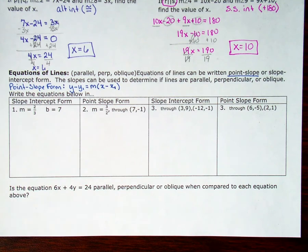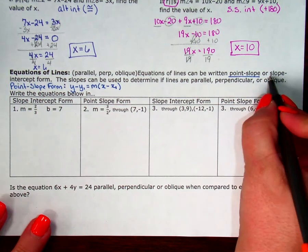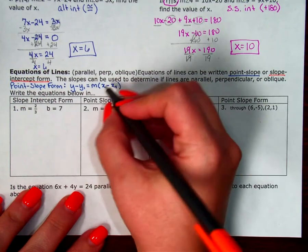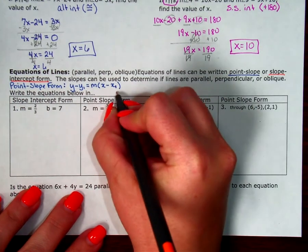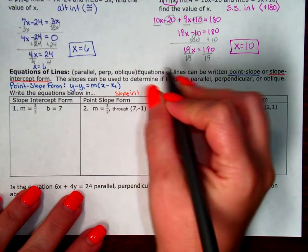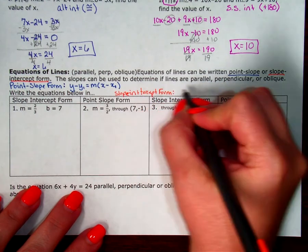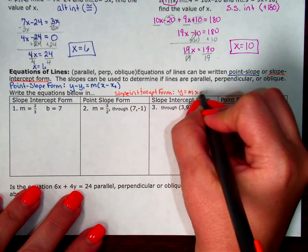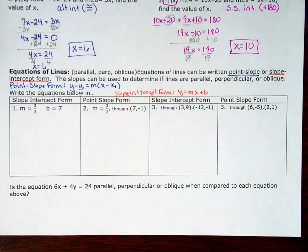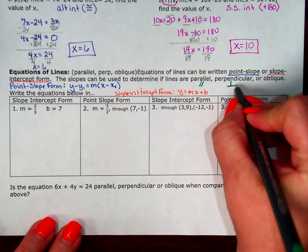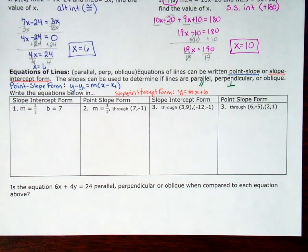That's point-slope form. The other form is slope-intercept form, which you focused on a lot in Algebra 1 and Algebraic Reasoning — y equals mx plus b. That's the one we see a lot, especially when you're trying to graph. We're also going to look at pairs of lines: are they parallel, perpendicular (the upside-down T symbol), or oblique — and there's no symbol to represent oblique.